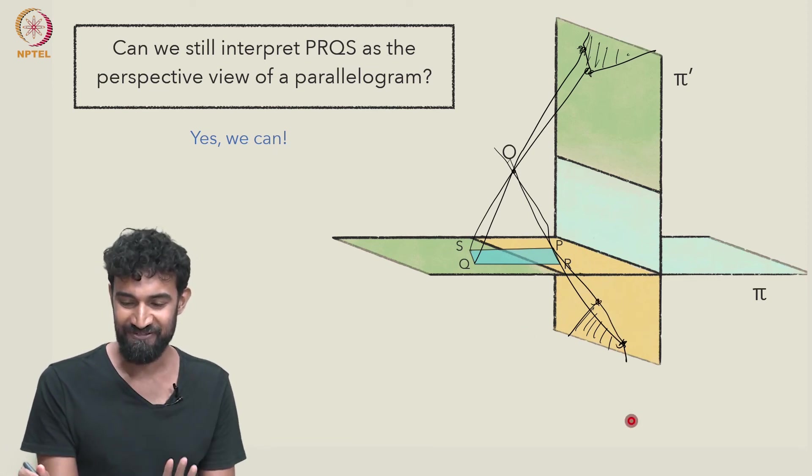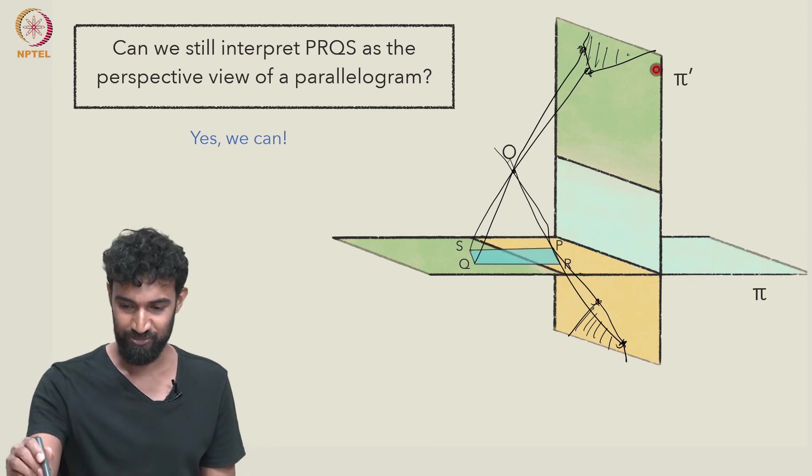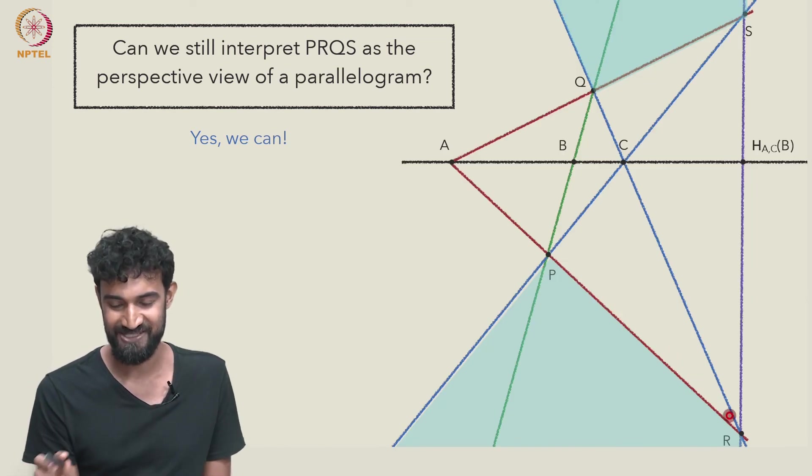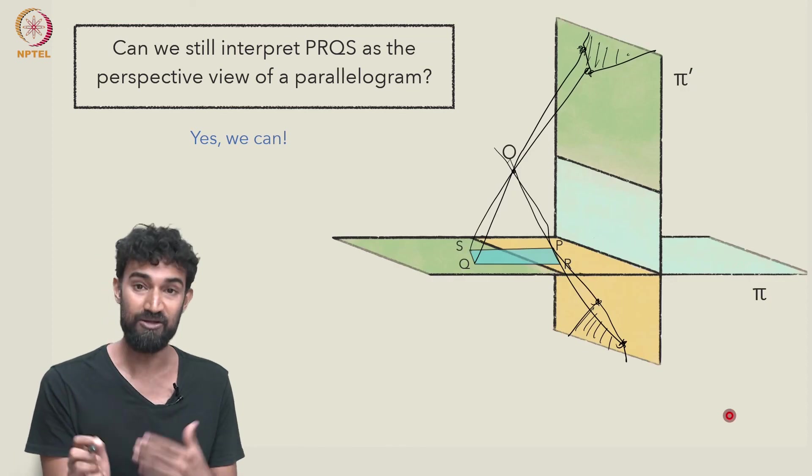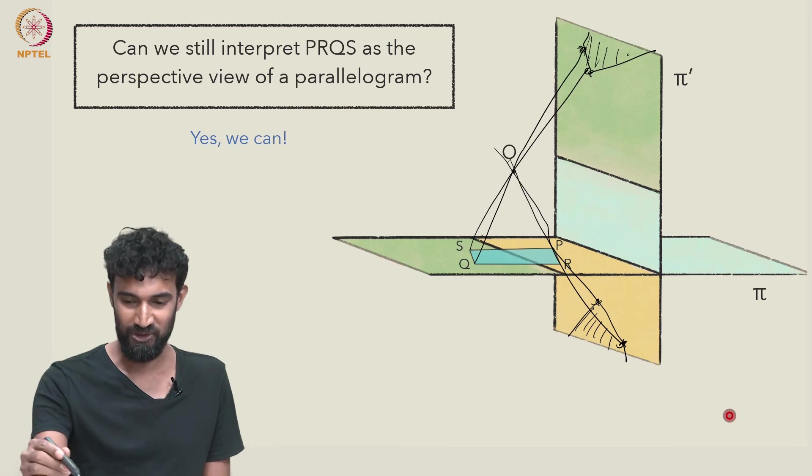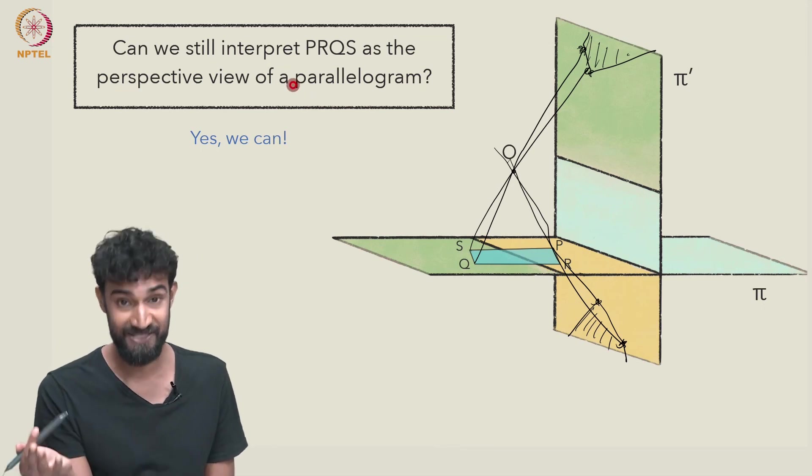So in our real life interpretation, when we look at the plane π, we will get an image that looks something like this. So in fact, our justification still works if you allow for perspectivities instead of just narrow perspective views.